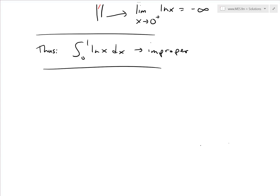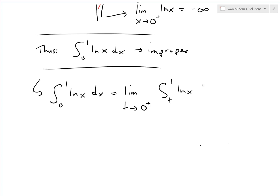Since it's improper, as shown in my earlier video, we have to write it as a limit. So the integral from 0 to 1 of ln(x) dx equals the limit as t approaches 0 from the right side of the integral from t to 1 of ln(x) dx.